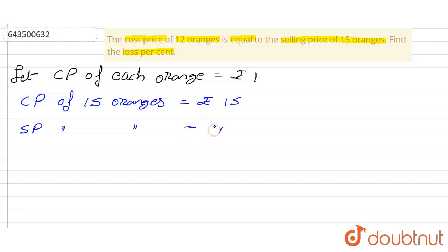...equal to the CP of 12 oranges, that is equal to rupees 12. So according to that, what is the CP? CP is equal to rupees 15.